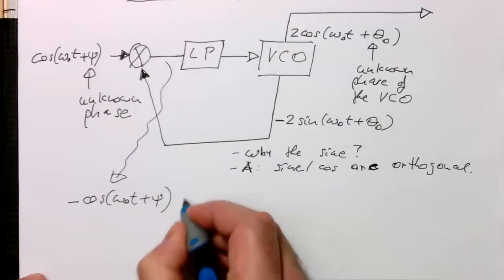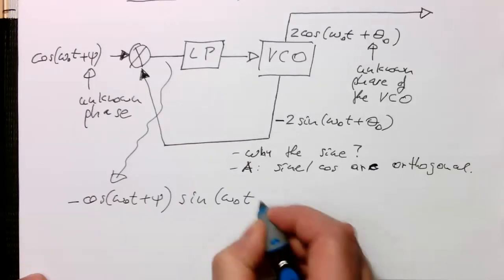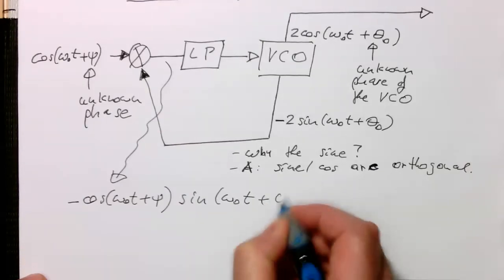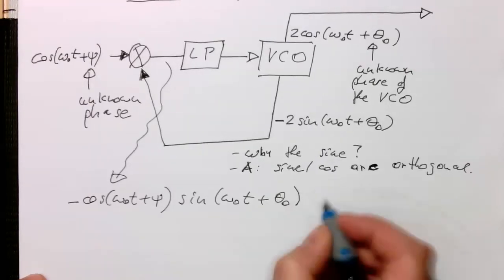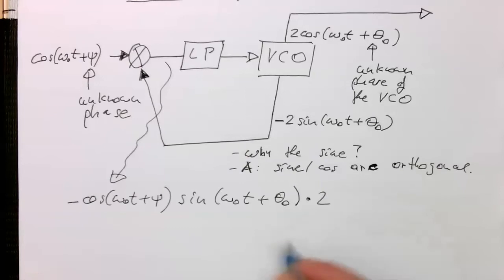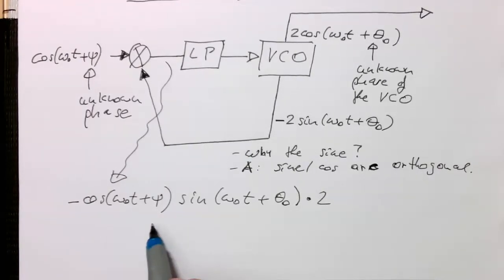and we're multiplying this with sine of omega zero t plus theta zero. And of course we've got a factor two here. So there's this convenient formula where we can just turn this into a sum and then into a difference.